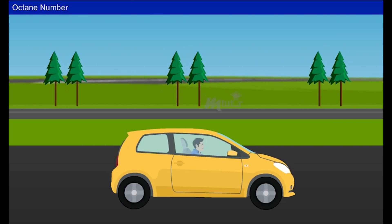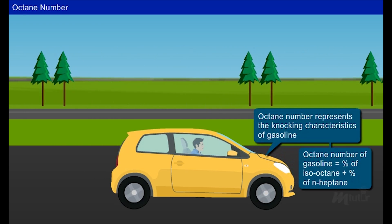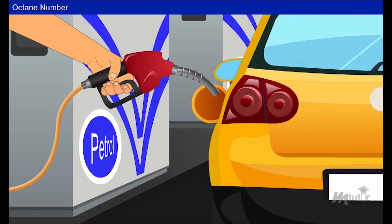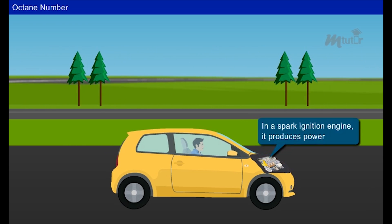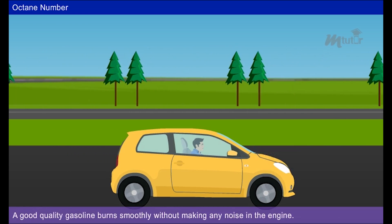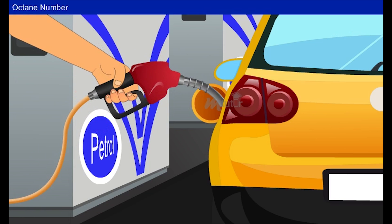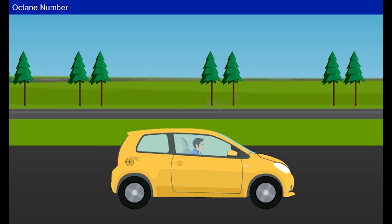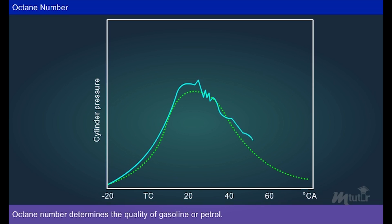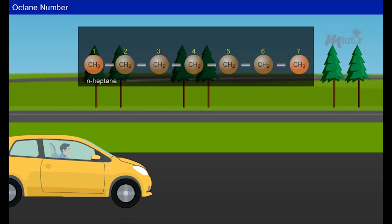Octane number represents the knocking characteristics especially for gasoline in an IC engine. The quality of gasoline or petrol determines the octane number. When gasoline is burned in a spark ignition engine it produces power. A good quality gasoline burns smoothly without making any noise in the engine. When bad quality gasoline is burned it produces a sudden high pressure — it is not smooth — and pressure waves, knock, or detonation are formed in the engine.